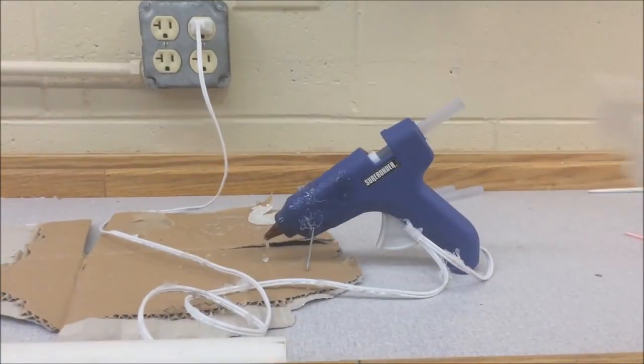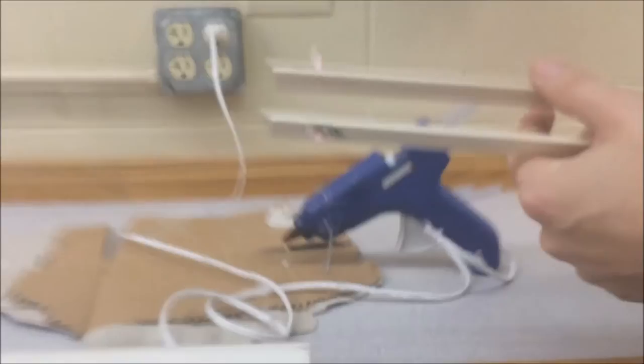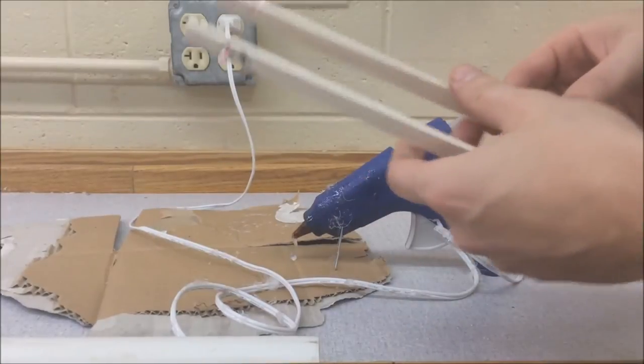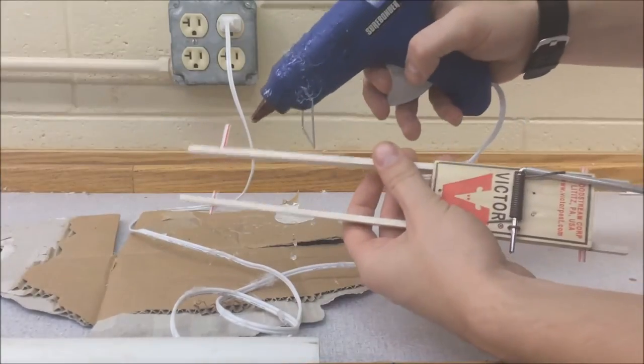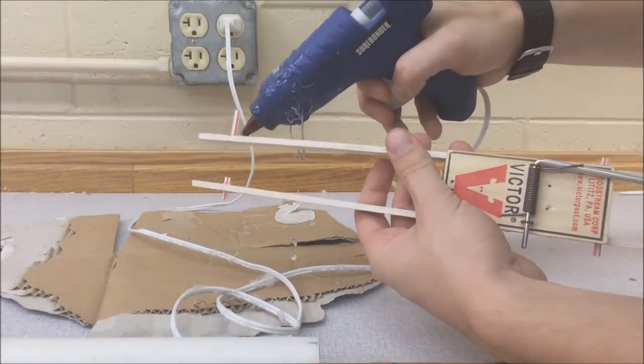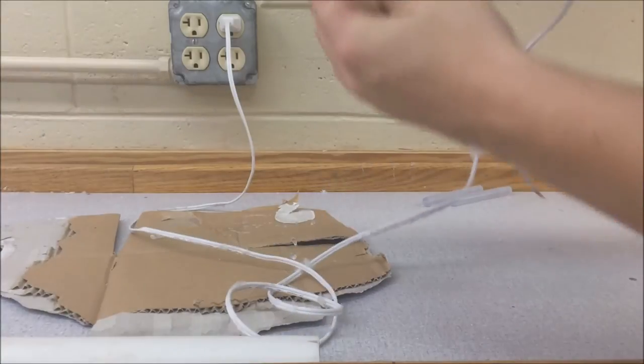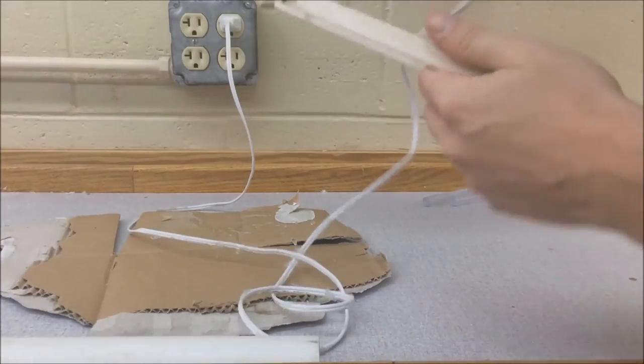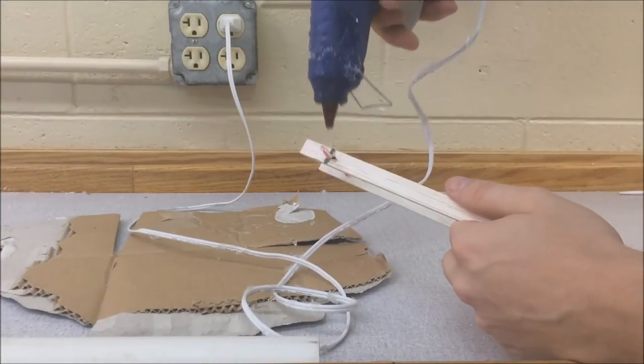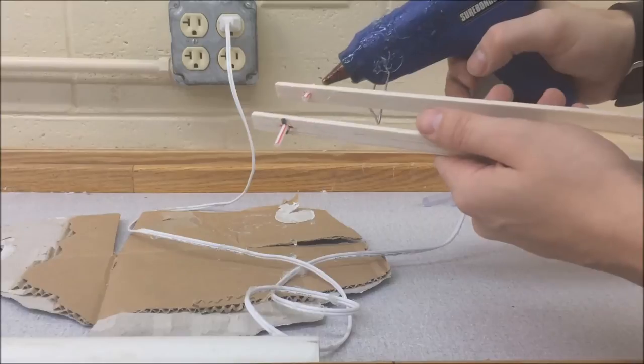Now we're going to super glue these. When you super glue a straw, a plastic straw, make sure that you're only putting glue near the wood because if you touch the tip of that hot glue gun to that straw, it's actually going to burn through and melt that straw. Not good.